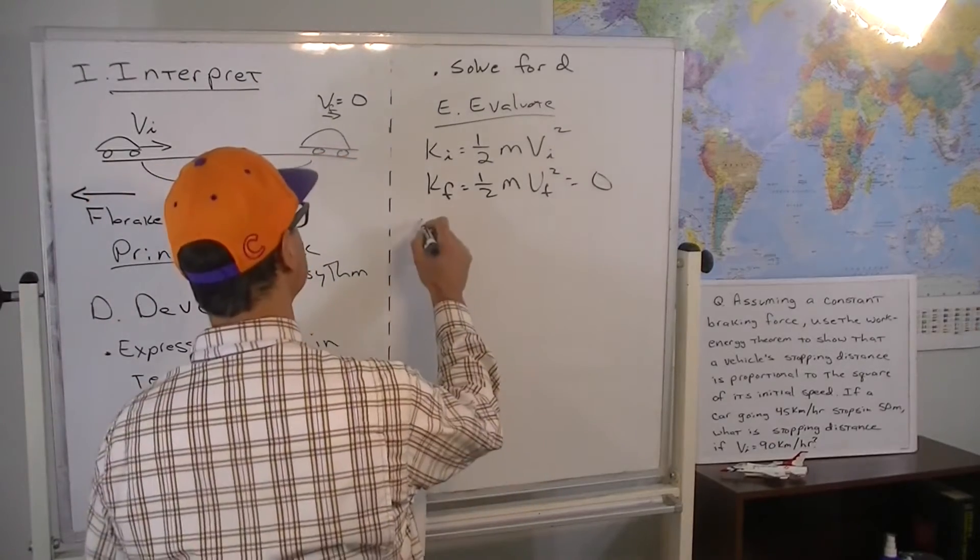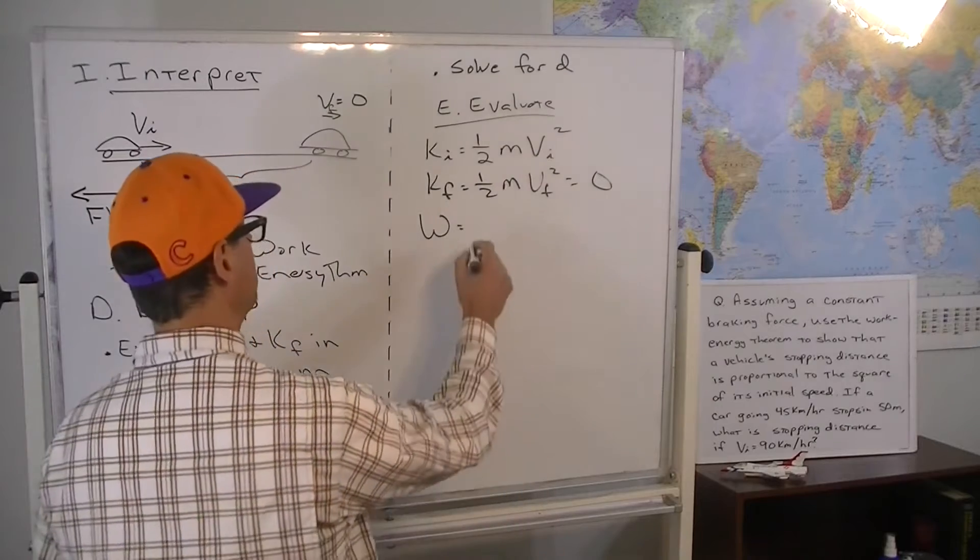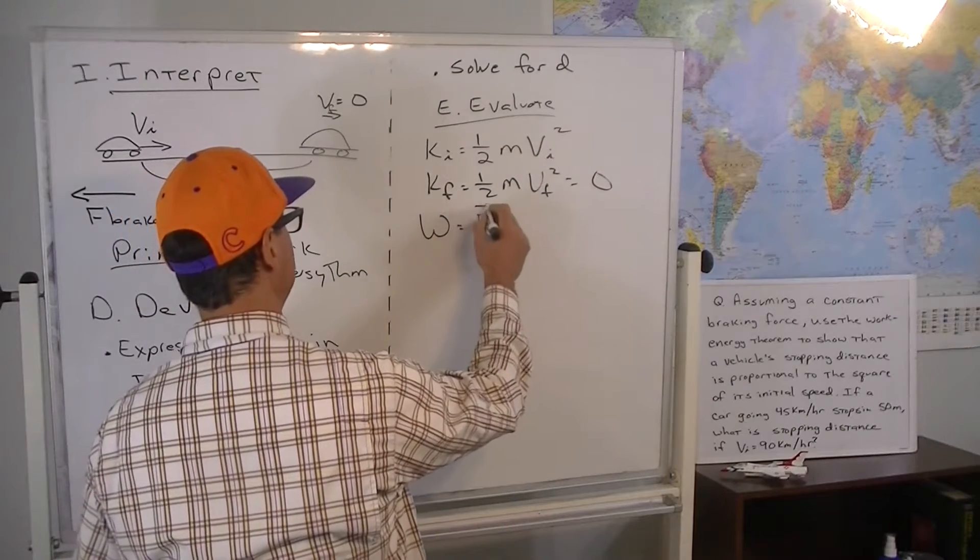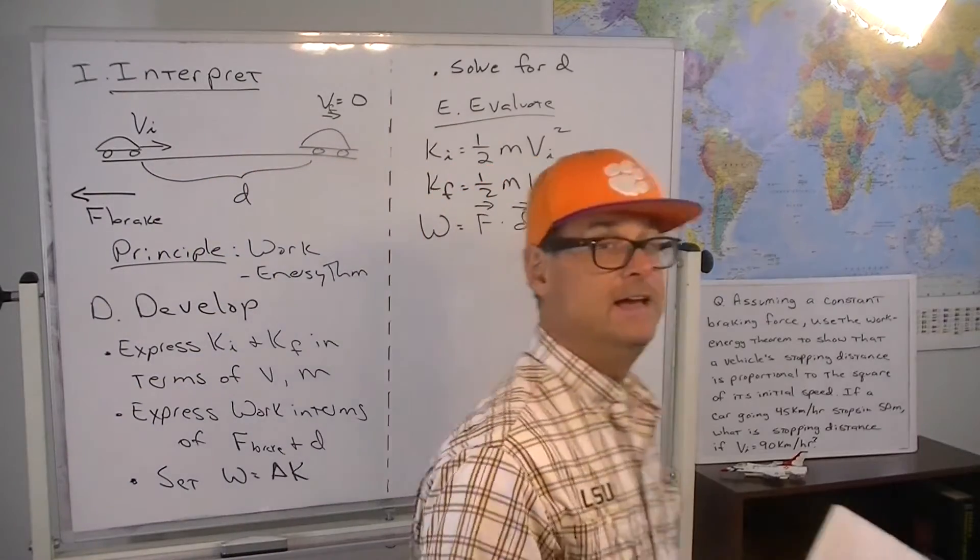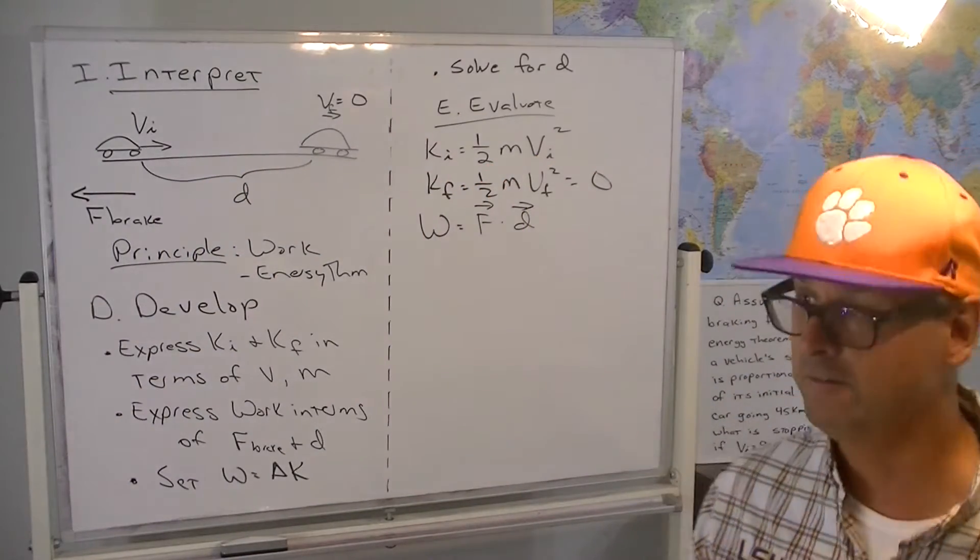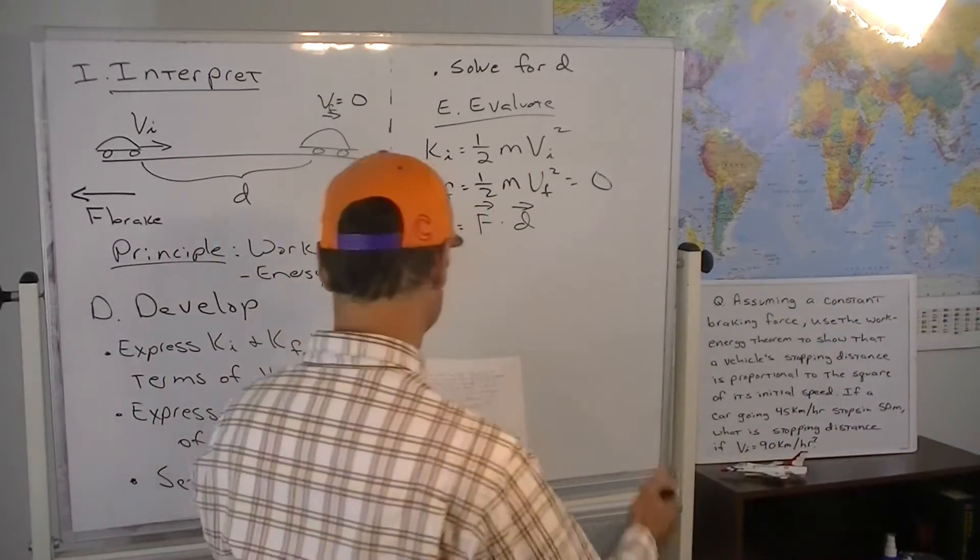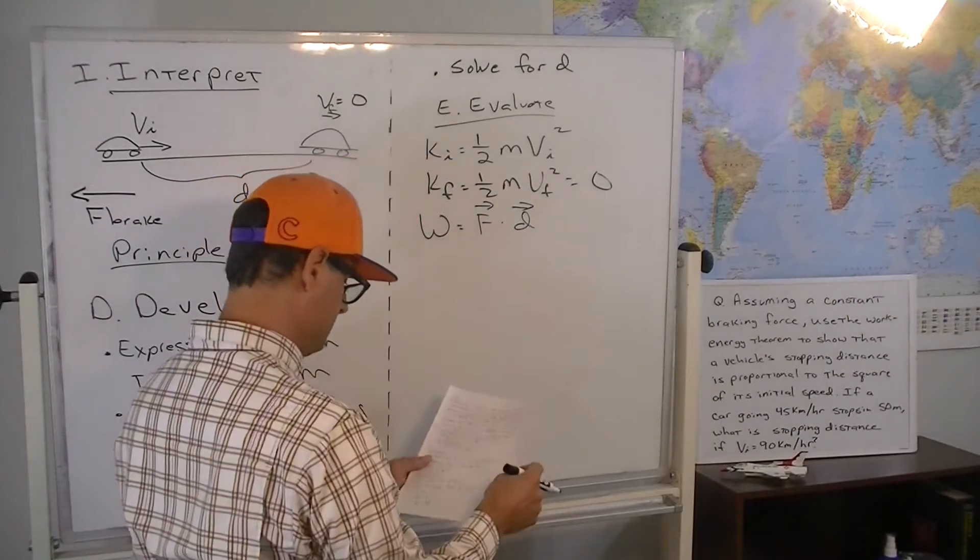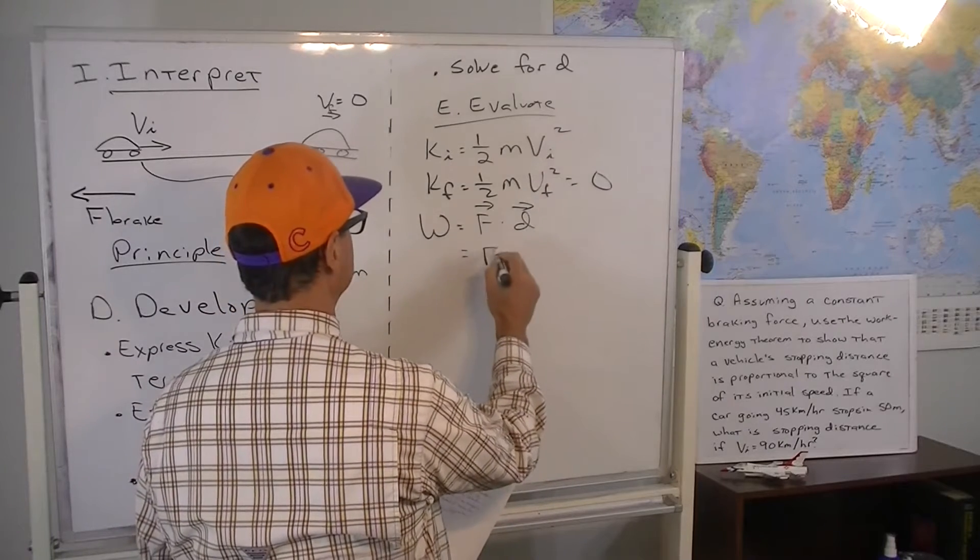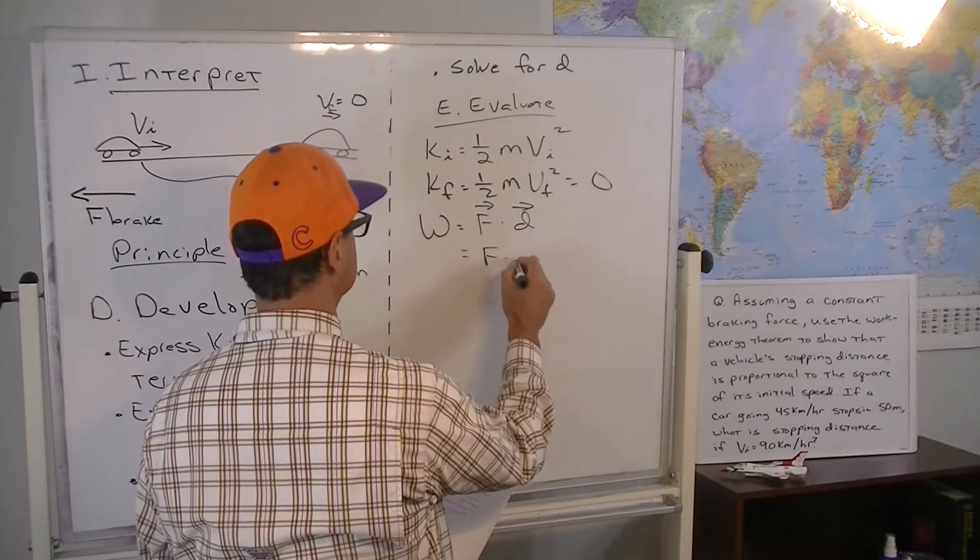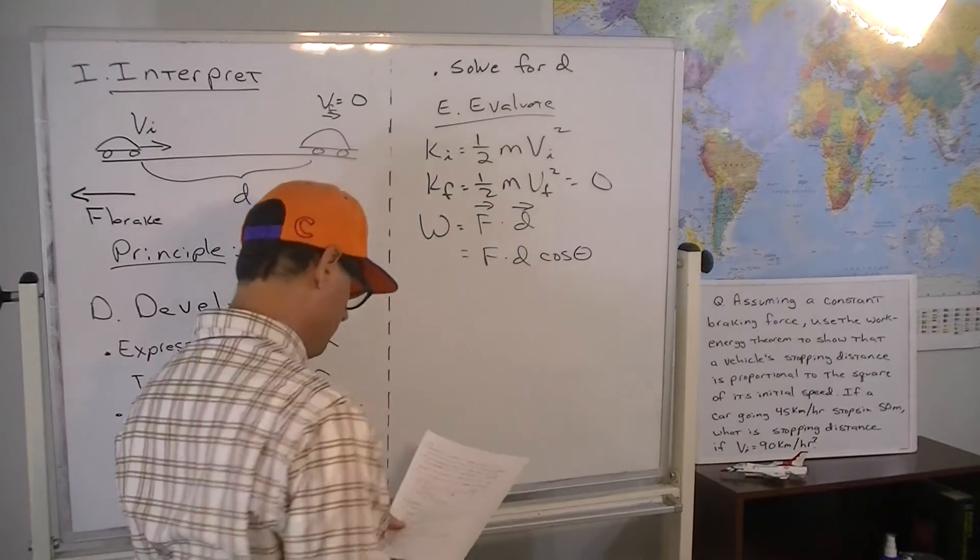All right, now the work in this kind of case is the force vector dotted with the displacement vector in the case of a constant force. And so the force and the displacement vector are both constant. So this works out to be the force times the distance times the cosine of the angle.